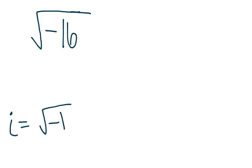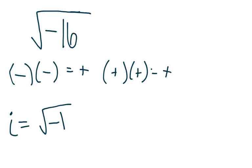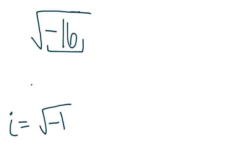Remember that it is not possible with real numbers to take the square root of a negative number because if you multiply a negative times a negative, you get a positive, and if you multiply a positive times a positive, you get a positive. You never get a negative value by multiplying the same two numbers by each other.